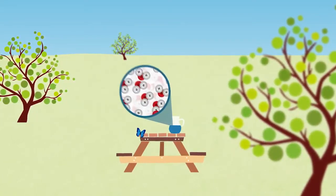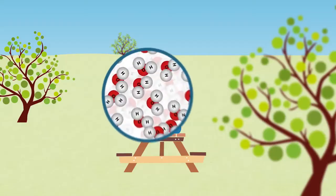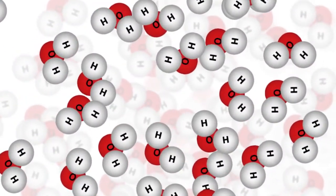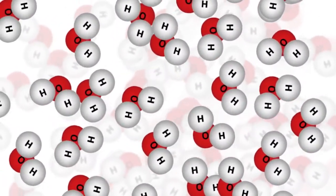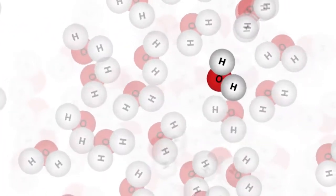For example, water is made up of atoms. This model shows atoms joined together in groups called molecules. Water molecules are made of hydrogen and oxygen atoms.